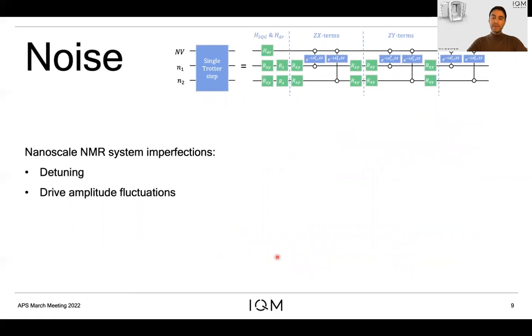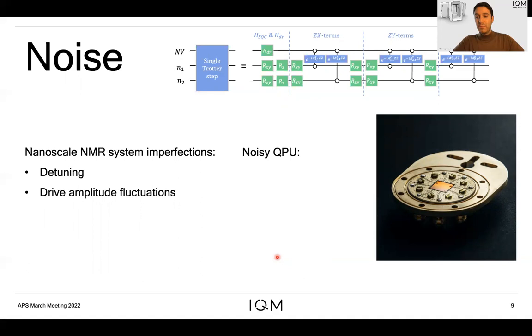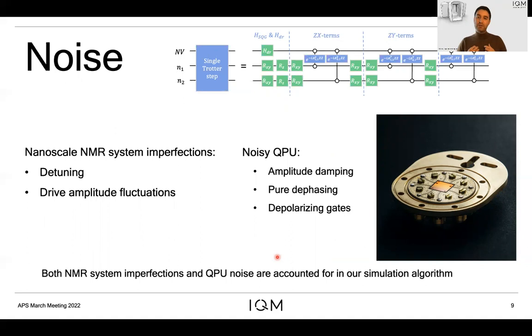It is important when dealing with simulations of nanoscale NMR systems to take into account possible system imperfections. The most important of them being energy detunings in the NV and fluctuations in the amplitude of the drive. We have not yet implemented this algorithm on an actual quantum hardware, but we have performed classical simulations of this process taking into account the possible noise that a quantum computer might have. The most important of these noises are amplitude damping and dephasing for the qubits and a depolarization channel for the gates, all of them based on the Kraus operators formalism. The bottom line here is that in our simulations we have included both nanoscale NMR system imperfections as well as the noise of the QPU.